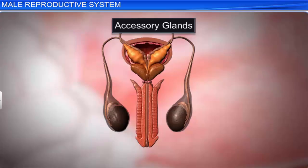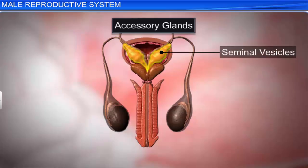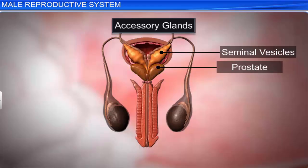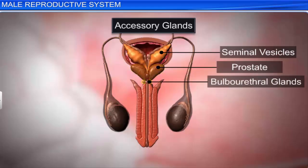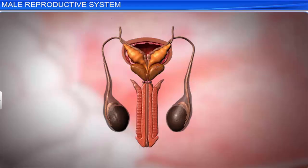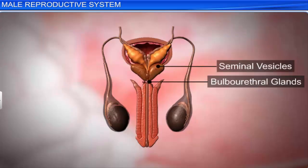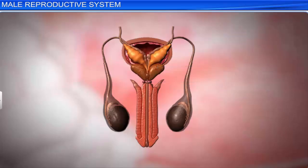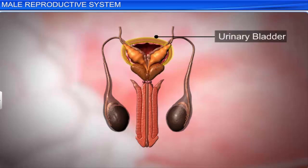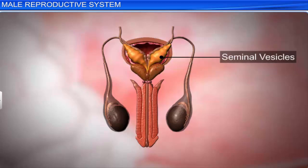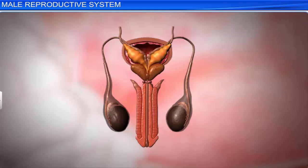The male accessory glands include a pair of seminal vesicles, a prostate, and a pair of bulbourethral glands. They secrete seminal fluid that contains fructose and prostaglandins. The prostate gland is present at the base of the urinary bladder, around the base of the seminal vesicle, and opens into the urethra through many ducts.